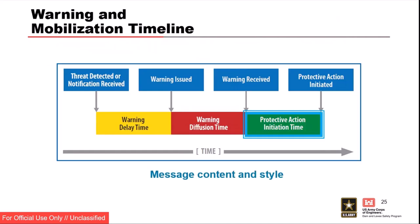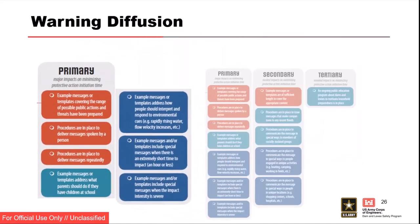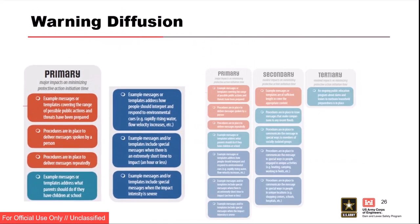Protective action initiation: message content and style. The best thing you can do to elicit a protective action response is to have well-developed messages — that's a key finding in this research. Primary factors are available in the public warning guidebook. The primary takeaway: example messages or templates should be written down and include key components. Procedures should be in place to deliver messages repeatedly at recurring time intervals. If the message changes, that happens immediately. By delivering it regularly, you're letting people know the situation hasn't changed and they still need to take that protective action.